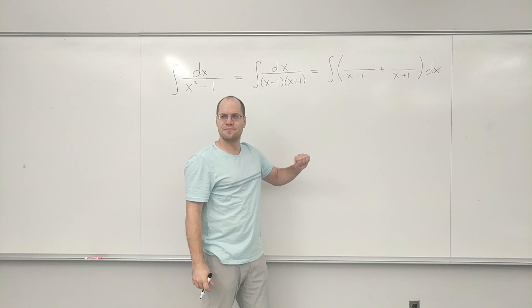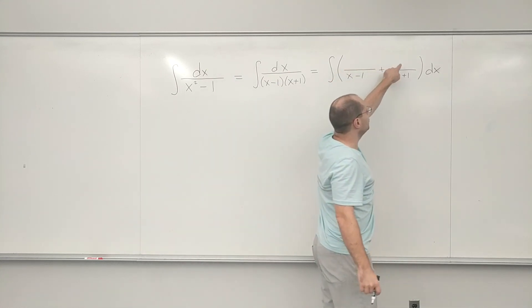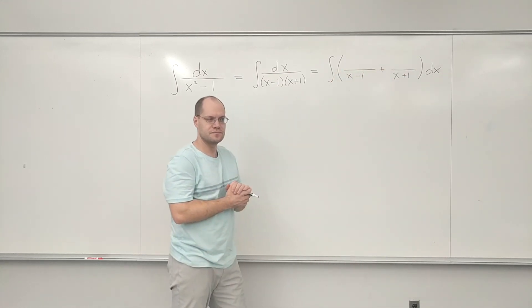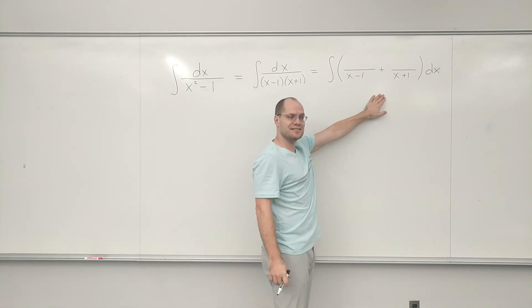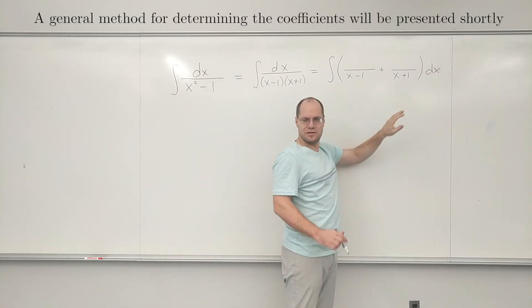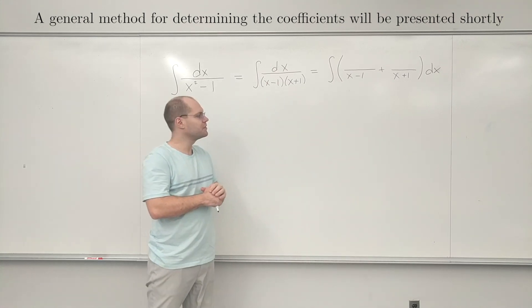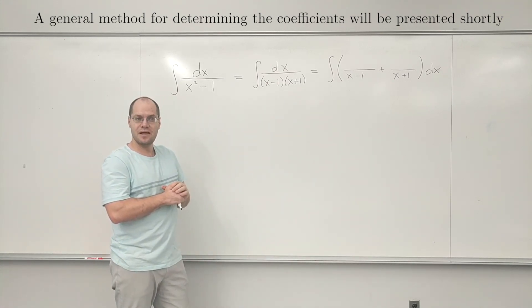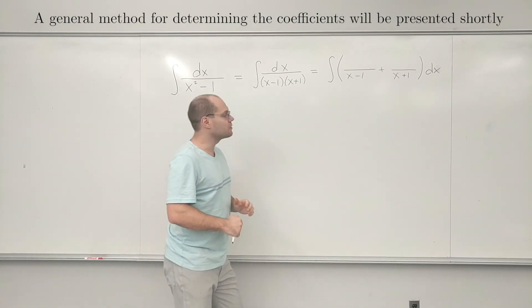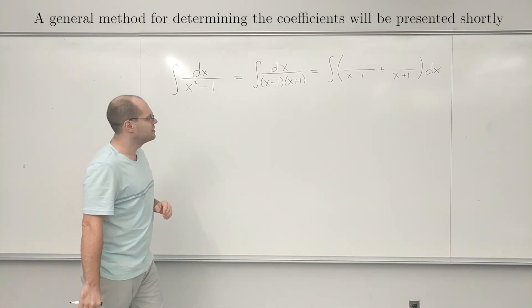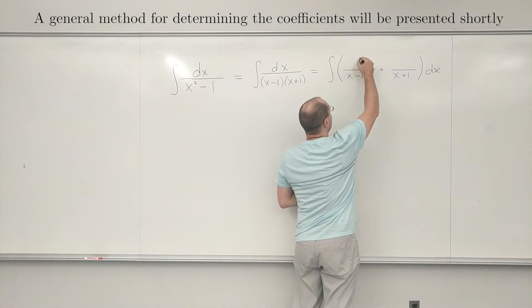You're always able to do this. The only question is, what goes into the numerators? And for a problem this simple, we can just guess. In a moment, we'll get a little bit more sophisticated. We'll have a more general method for deciding what goes on top. But for now, you can actually just guess. And so let's try one and one.